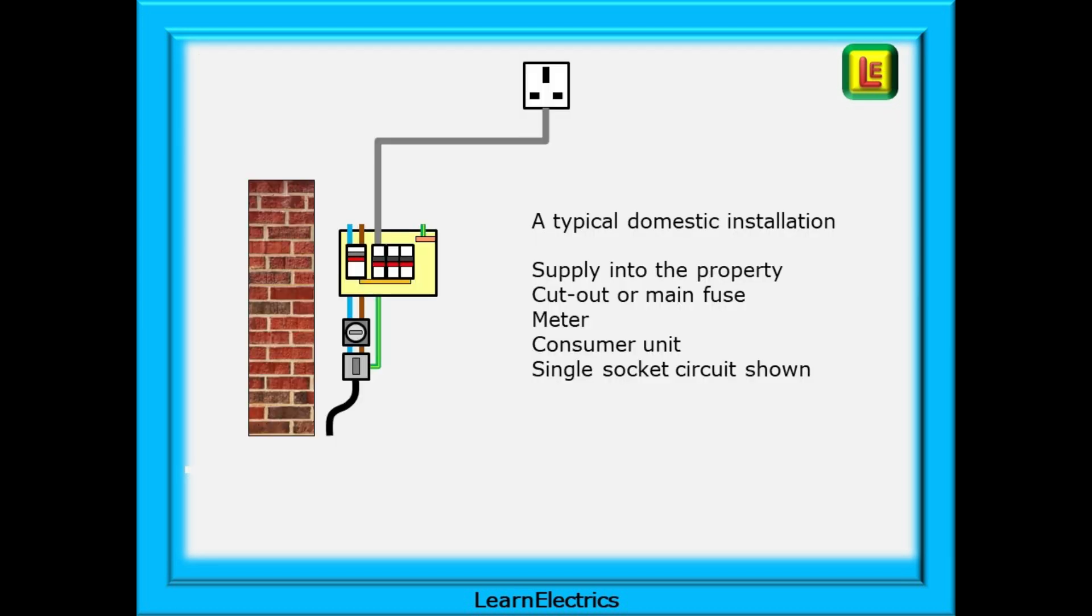Building the picture up in steps then, we have here a simple drawing of a typical domestic installation. We have a supply into the property with a cutout box or main fuse and a meter. Then we have the consumer unit and keeping it simple, just a single socket circuit is shown but this could be any circuit, lighting, shower and so on.